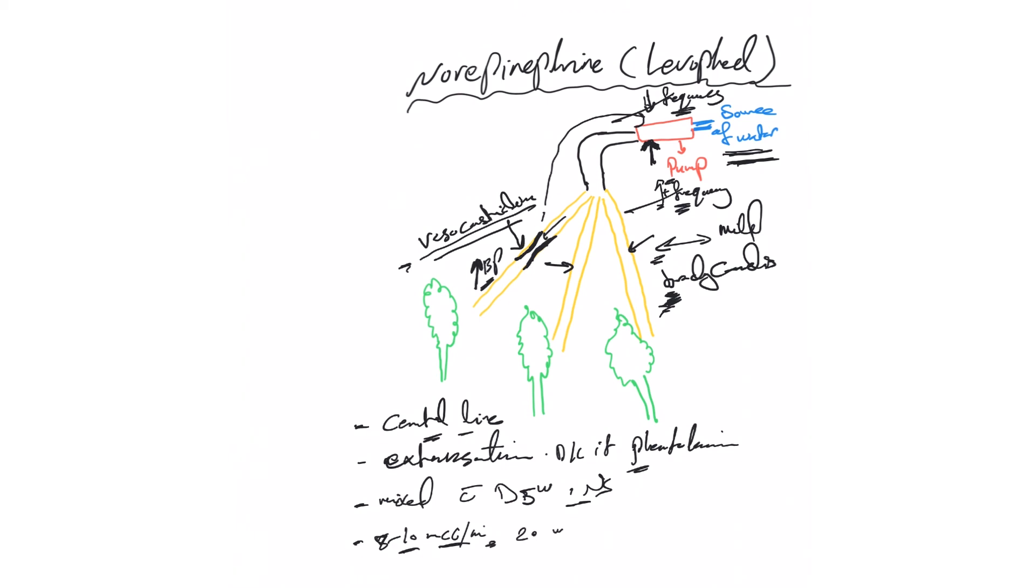Some nurses say 2 mcg per minute, I've seen 30 and 35, I've seen some intensivists using 50. Again you want to avoid over or extreme vasoconstriction which can lead to dusky toes and fingers.